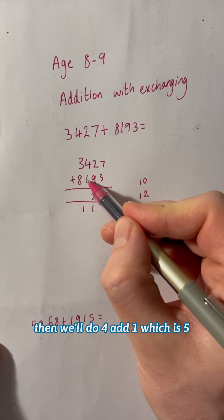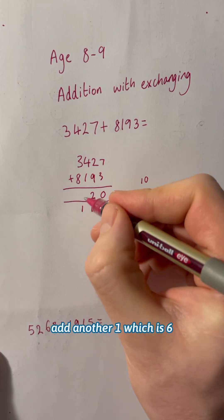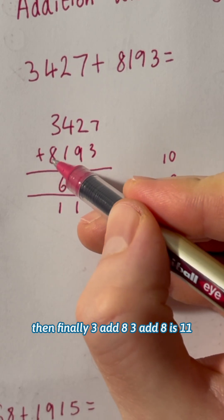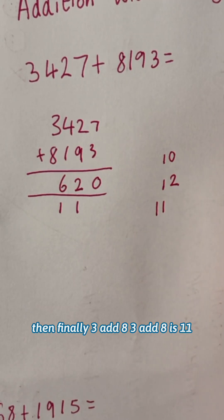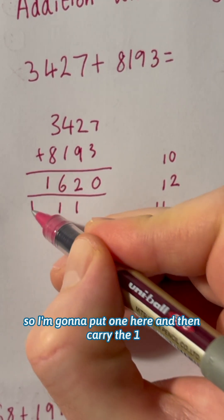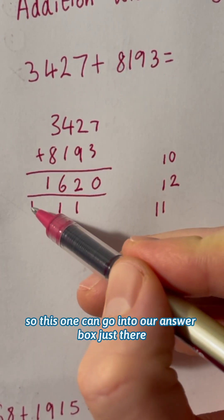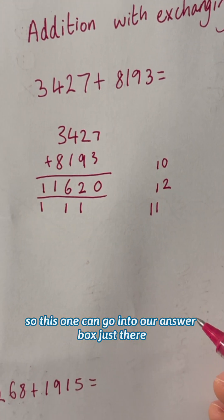Then we'll do four add one which is five and another one which is six. Then finally three add eight. Three add eight is 11. So I'm going to put one here and then carry the one. I've got nothing else that I need to add. So this one can go into our answer box just there.